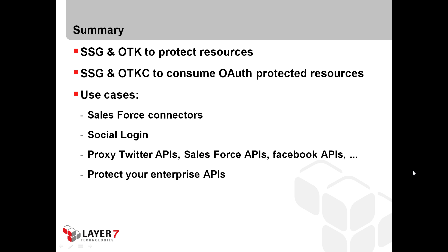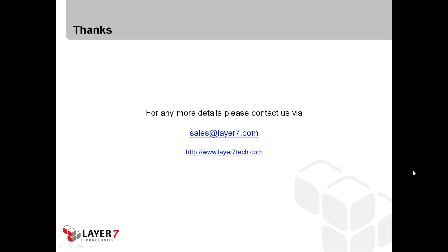To summarize this demo: using the gateway and installing the OTK — the OAuth Toolkit — allows the gateway to protect resources via OAuth. Using the OTK client allows the gateway to consume OAuth-protected resources. Use cases include implementing Salesforce connectors, social login, auto-proxy, Twitter APIs, Salesforce APIs, Facebook APIs, or simply protecting your own enterprise APIs via OAuth. For more details, please contact us via sales@layer7tech.com or visit our website at www.layer7tech.com. Thank you.